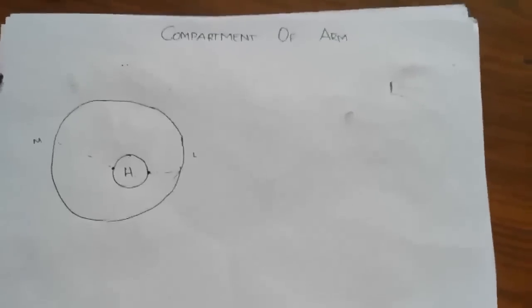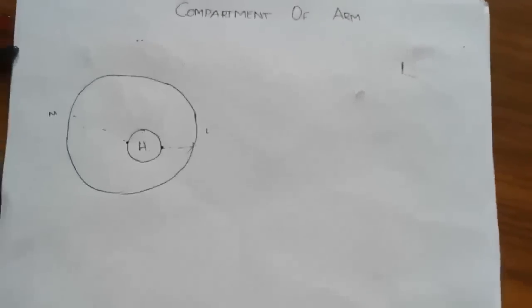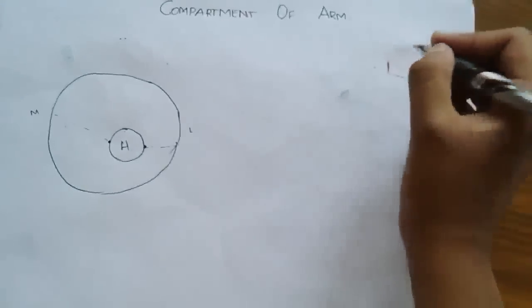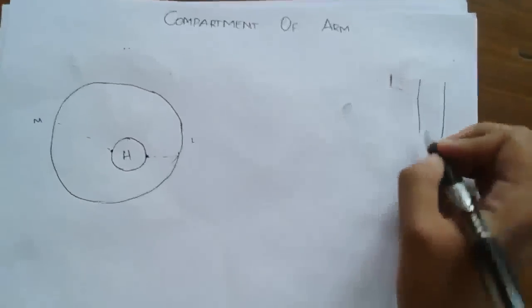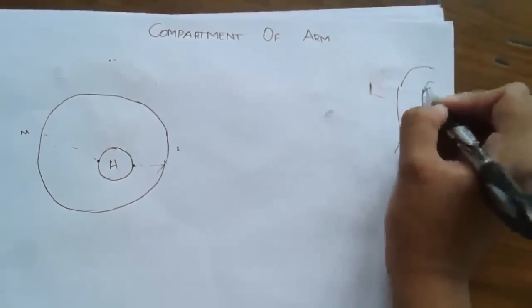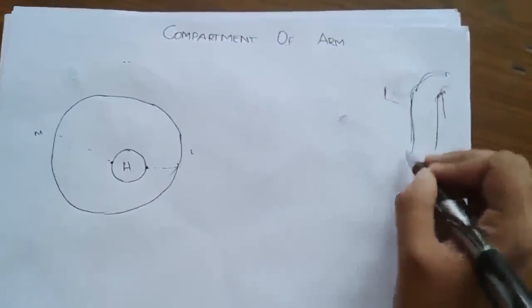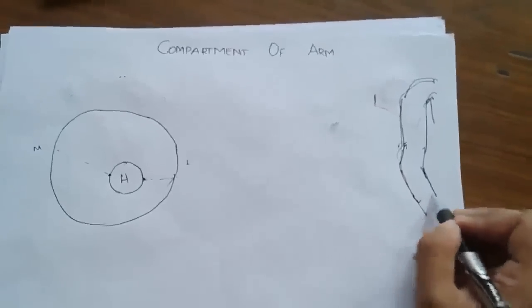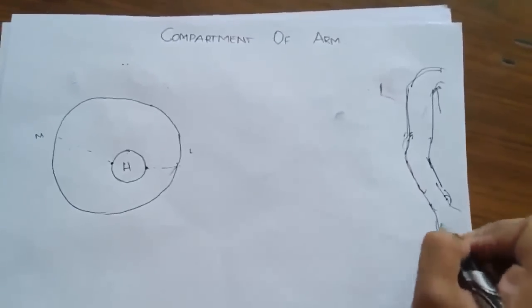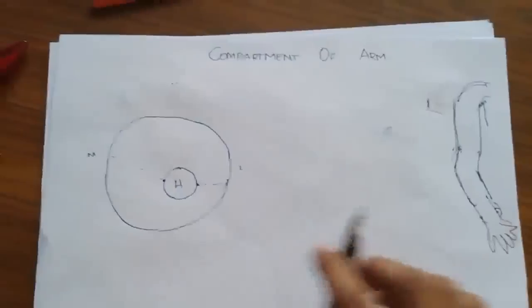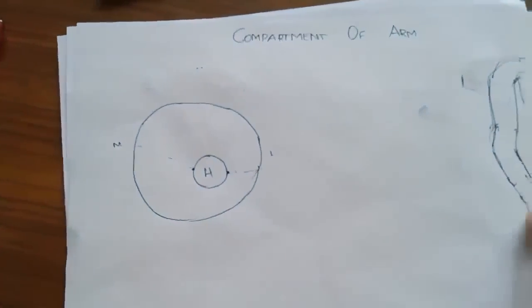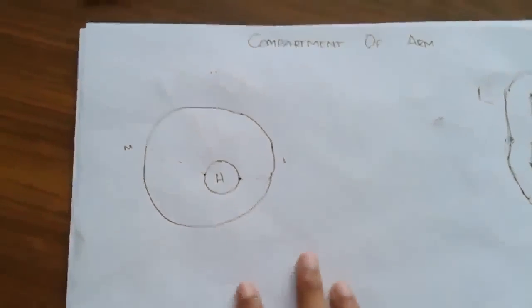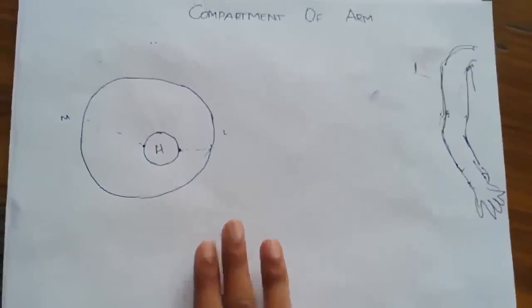In this lecture I'm going to explain the arm. I hope you know the difference between the arm, hand, and forearm. This is the arm, this is the shoulder, this is the shoulder joint, this is the arm, this is the elbow, and from the elbow continues the forearm, then the wrist joint, and then the hand. I drew it just to clarify the difference between arm and forearm.